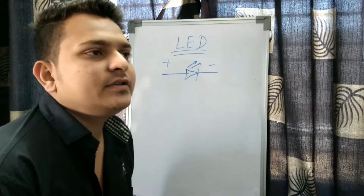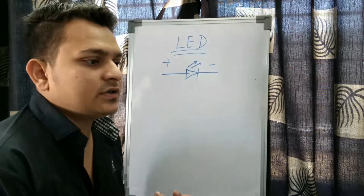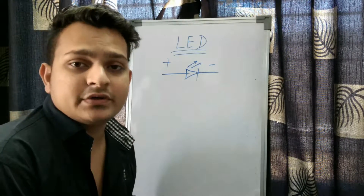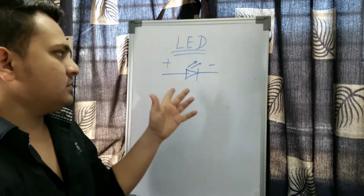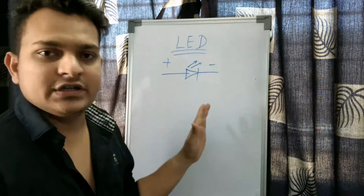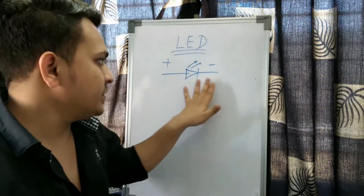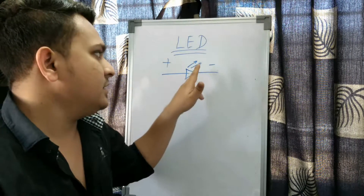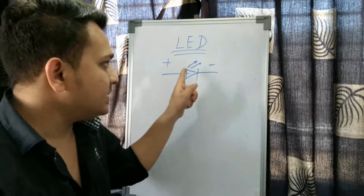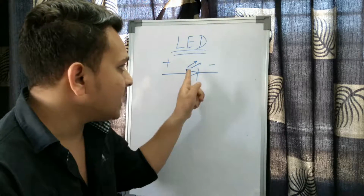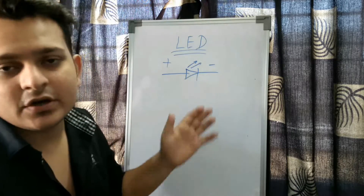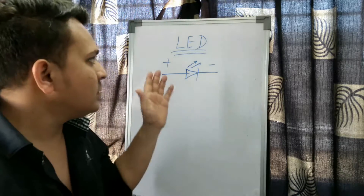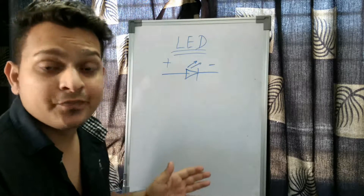We are starting with the LED. LED stands for Light Emitting Diode. If you look at its symbol, it is just a diode symbol with a light-emitting symbol added. So the LED is nothing but a diode.